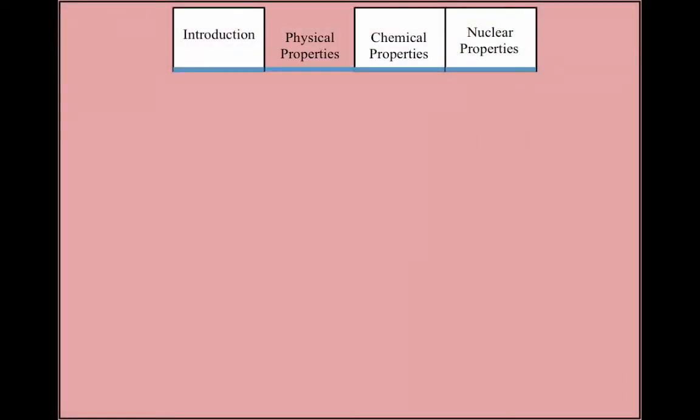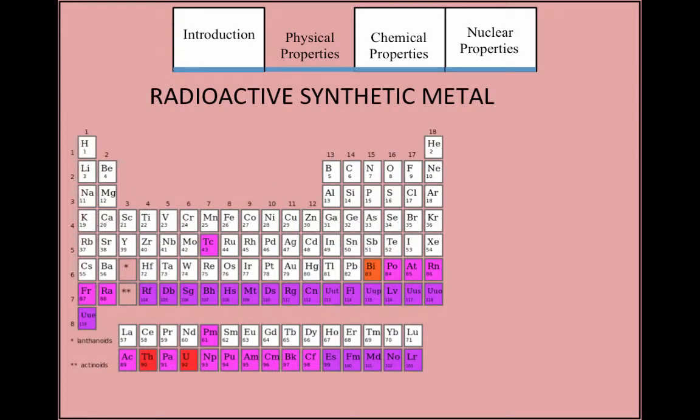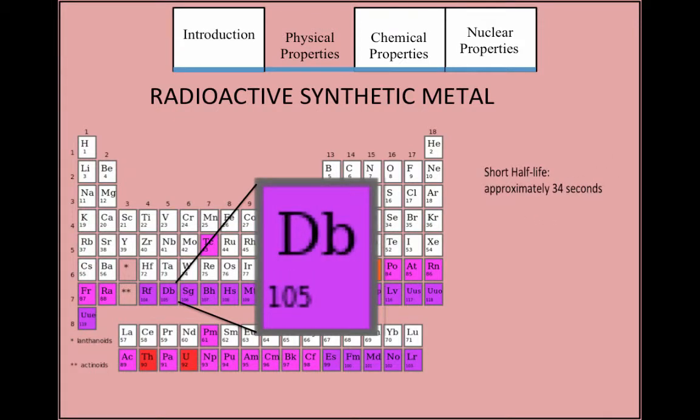Dubnium, on the other hand, is a radioactive synthetic metal that does not have a defined boiling or melting point. Dubnium is an unstable isotope with a half-life of 34 seconds and, like the rest of the elements in group 5B, is found in its solid state at room temperature.